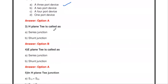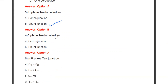The next question: the H-plane T is called as — series junction or shunt junction? The H-plane T is called a shunt junction, also known as a current junction. Similarly, the E-plane T is called a series junction, also known as a voltage junction.